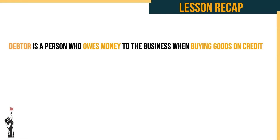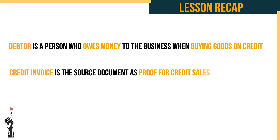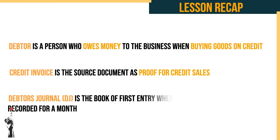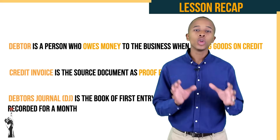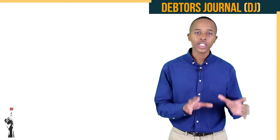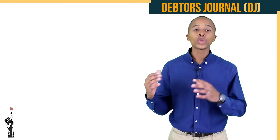A debtor is a person who owes money to the business. When buying goods on credit, a credit invoice is the source document as proof for credit sales. A debtor's journal, or DJ, is the book of first entry where all credit sales are recorded for a month.